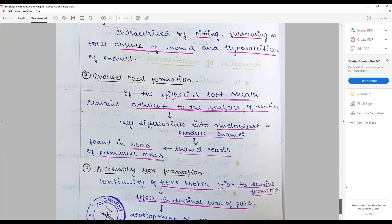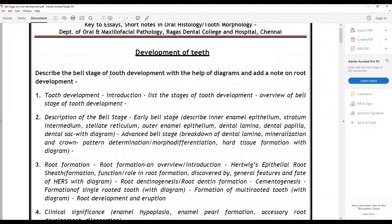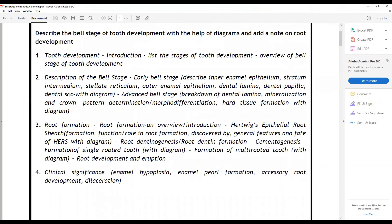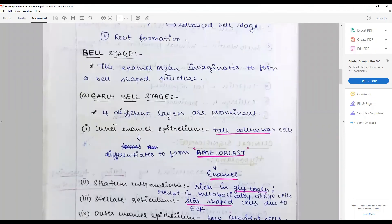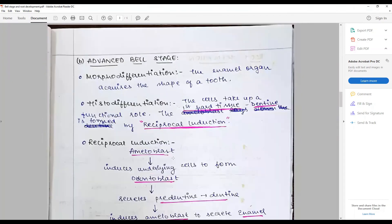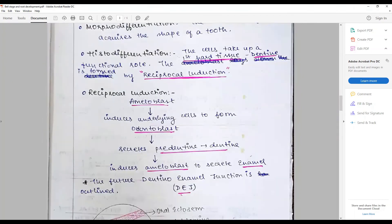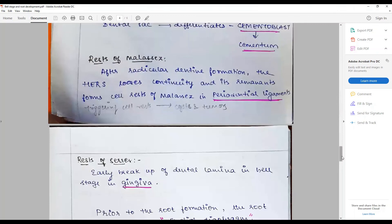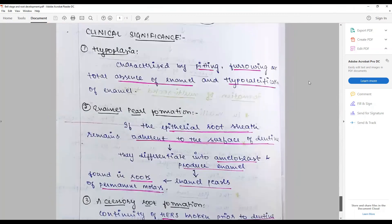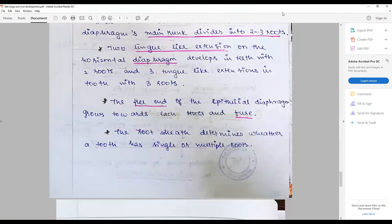So I hope you can write the answer for the question 'Development of bell stage of tooth development with the help of diagrams with a note on root development' - what has to be written, what has not to be written. Write about the stages, describe the bell stage, describe the layers, their functions, the diagrams. The mistake that the student has committed - everything has to be corrected, describe in detail. This is a very important essay question that gets repeated very often in your exams. Thank you, stay connected for another episode of one question a day. Keep learning.